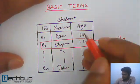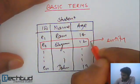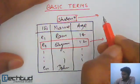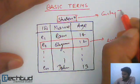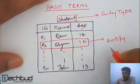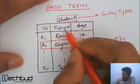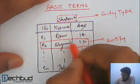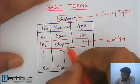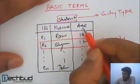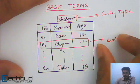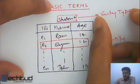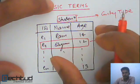Now, this Shyam is an entity of what kind? Student. So this is entity type. We say that Shyam with name Shyam and age 12 and ID E1, the student having name Shyam, ID E1, and age 12 is an entity of entity type student. So entity type is collection of entities having common attributes.